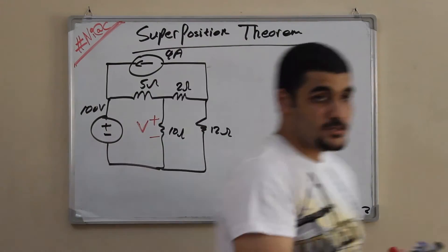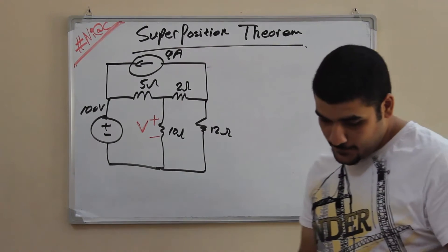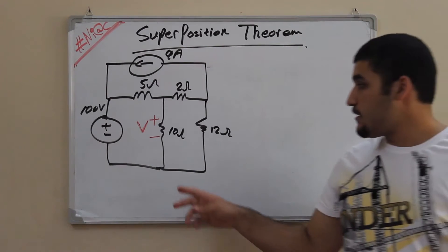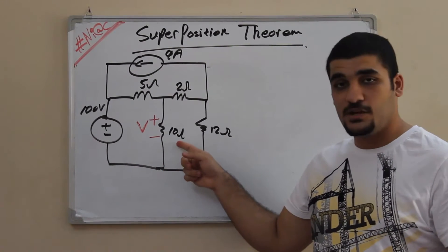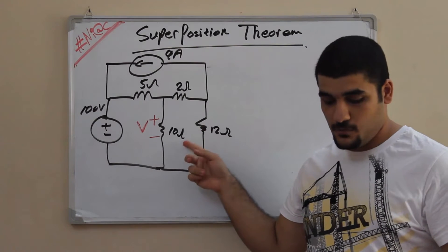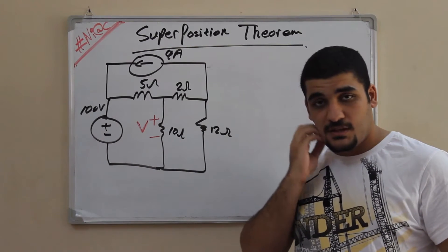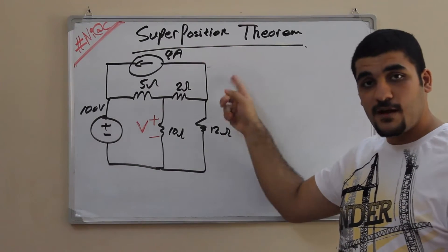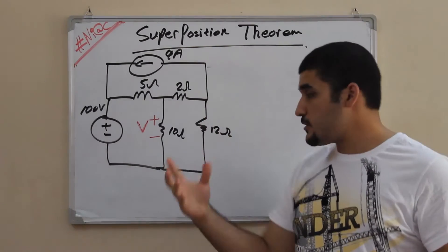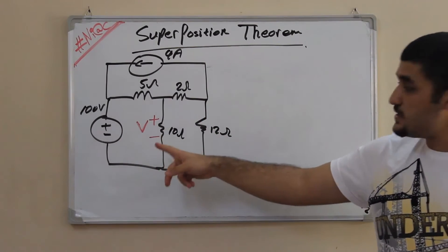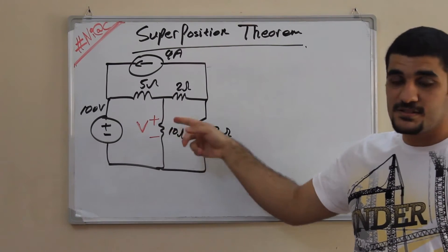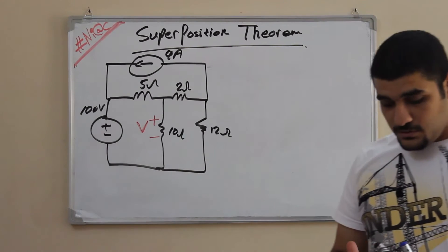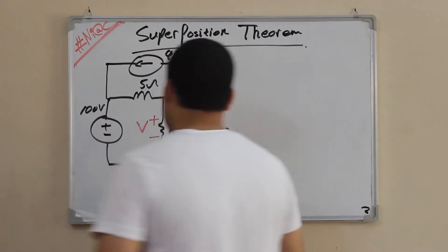Okay, so this is our question. The question is asking to find the voltage V across this component, which has a value of 10 ohms. Here is V — I'm going to find the voltage across this component using superposition.